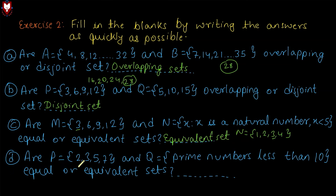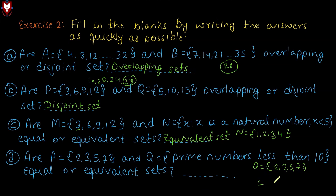Question number D: set P equals to 2, 3, 5, 7, and set Q equals to prime numbers less than 10. Are they equal or equivalent sets? Converting set Q to roster method: prime numbers less than 10 are 2, 3, 5, 7, since a prime number is divisible by 1 and itself only. Comparing set P and set Q: 2 matches 2, 3 matches 3, 5 matches 5, 7 matches 7. All elements are identical, so this is an equal set.